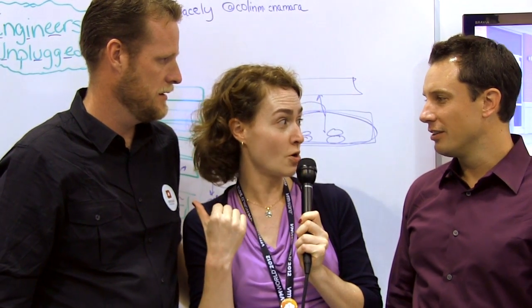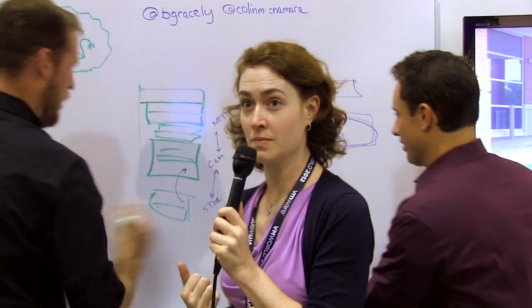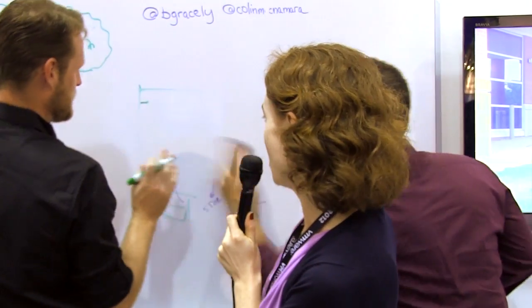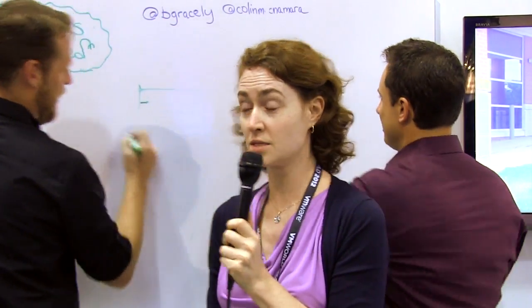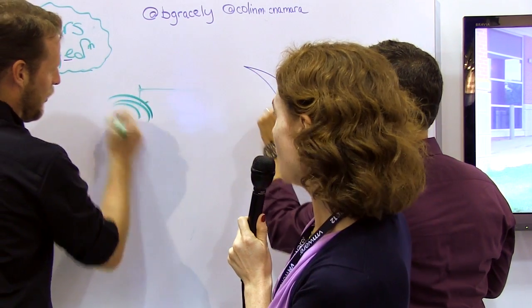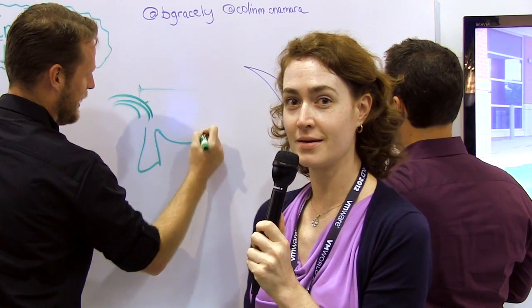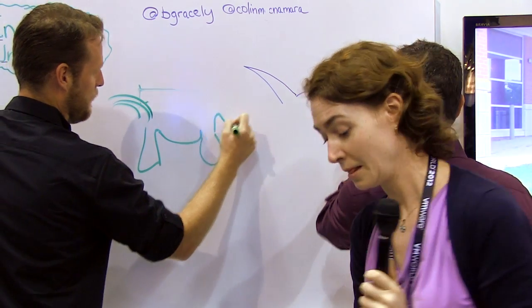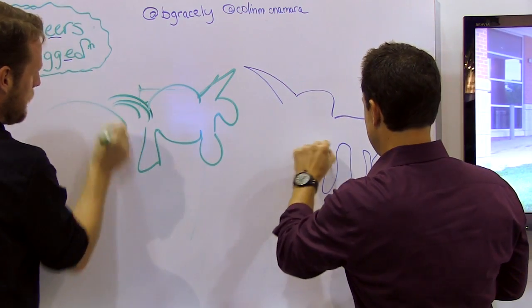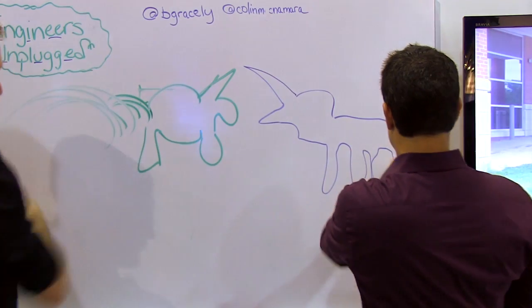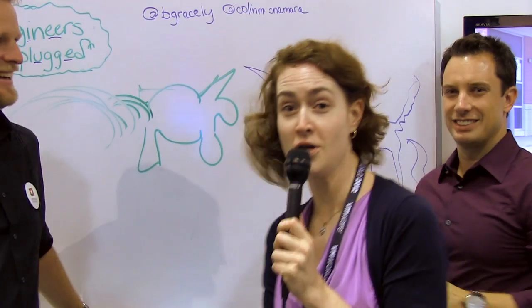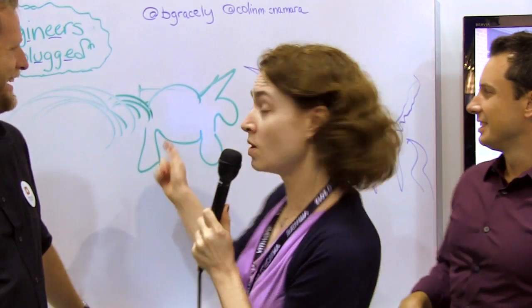One last thing for our viewers. Unicorn drawing challenge. Go. Draw a unicorn. Best unicorn. Yeah, go, go. All right. This is what the audience wants. We've got to move. Go. Got a leg. Got a body. Got another leg. A face of flying corn and rainbows coming out of this place. There you go, viewers. Colin's unicorn or Brian's unicorn? Colin definitely wins since it's way better. All right. We look forward to your votes. Thanks for watching Engineers Unplugged. We'll see you next time.